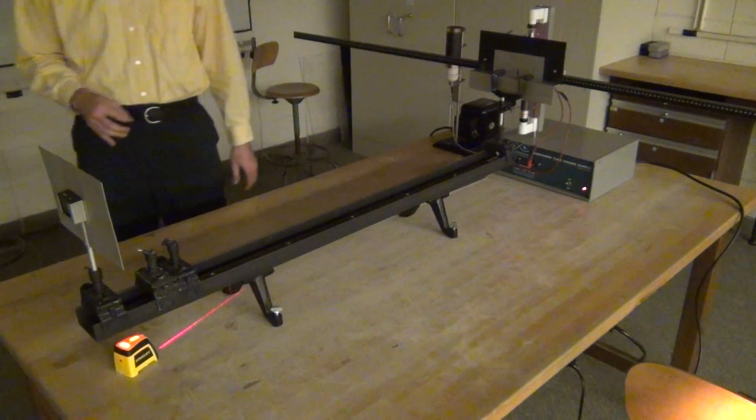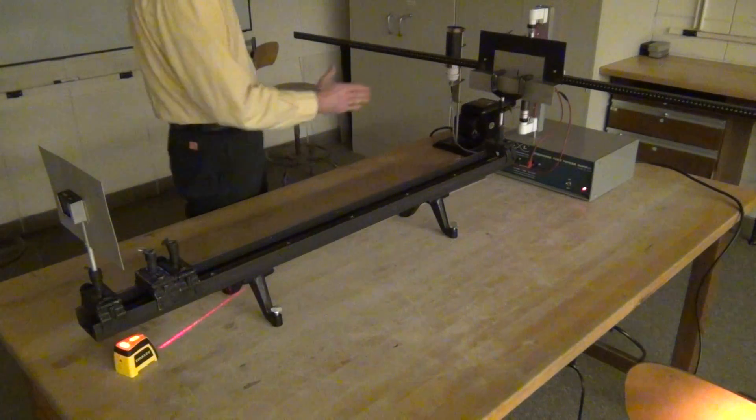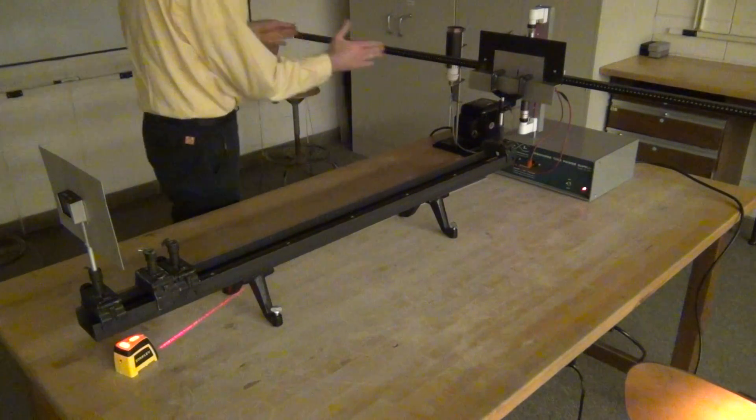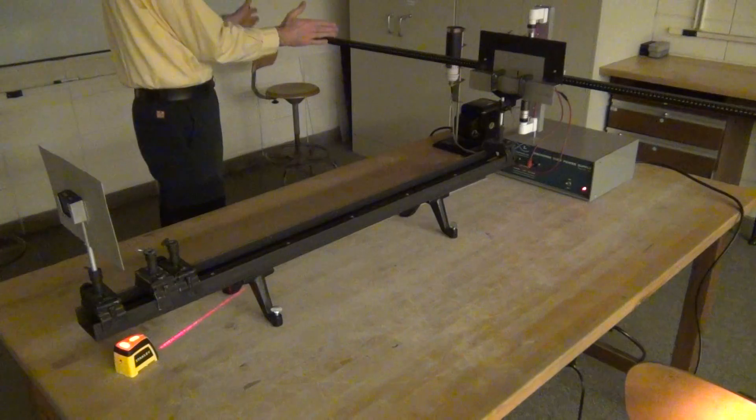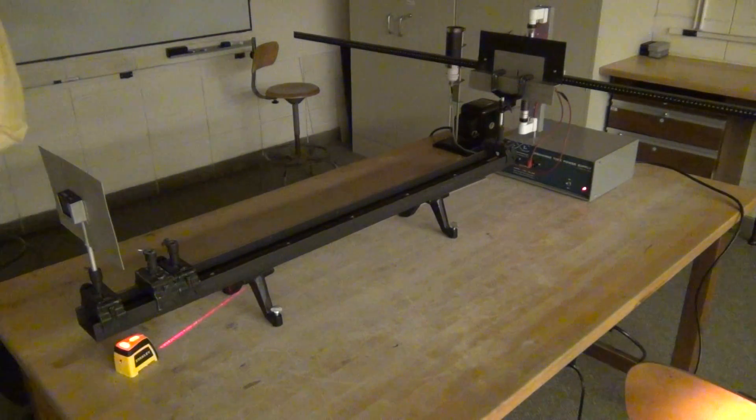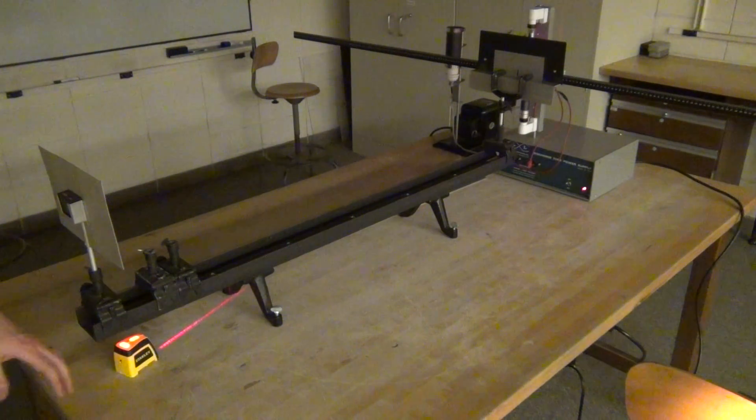And with the hydrogen, you should be able to see more than one order. So not just the first set of colors, but those same colors repeating on the other side. Again, have everyone in the group take those measurements and average them.